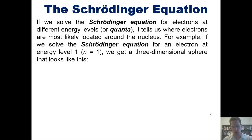Nevertheless, if we solve the Schrödinger equation for electrons at different energy levels, or quanta, it tells us where electrons are most likely to be located around the nucleus. For example, if we solve the Schrödinger equation for an electron at energy level 1, or n equals 1, we get a three-dimensional sphere that looks like this. And you might imagine doing that on a 3D graphing calculator.